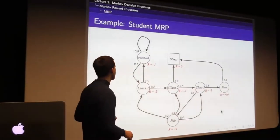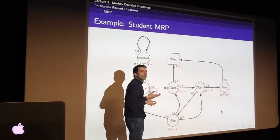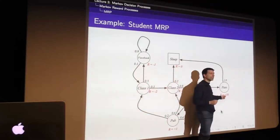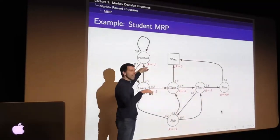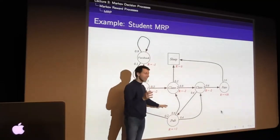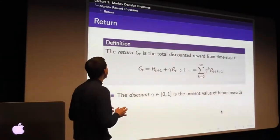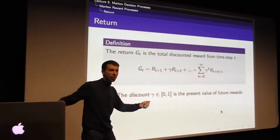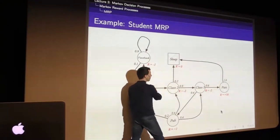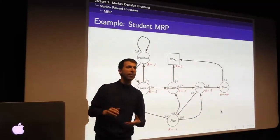Going back to the student Markov reward process, we add value judgments. Maybe you don't enjoy class, so that's minus two per class. If you pass at the end, you get a big bonus of plus ten. Facebook gives minus one per step as your brain drains. Going to the pub gives plus one. What we care about is the total rewards across a whole chain - not just one class, but the full sequence: minus two plus minus two plus minus two plus ten.